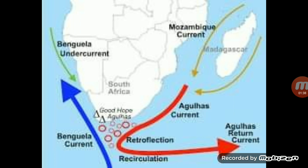Because of this, seals, fish, and penguins are found in the coastal part of the Namib Desert, despite them being creatures of cold regions at high latitudes.